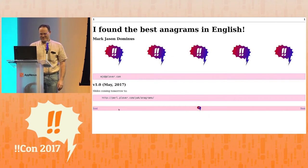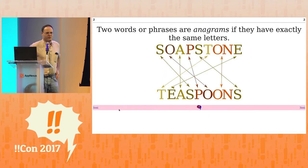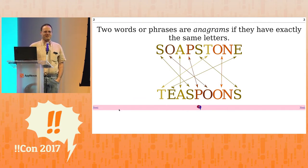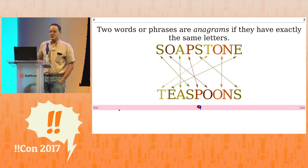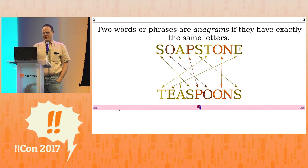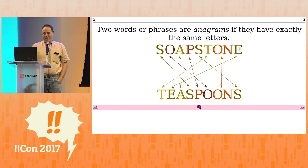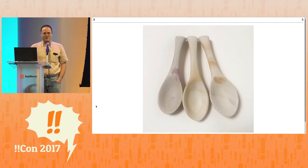Two words or two longer phrases are anagrams if they have exactly the same letters, possibly in some different order. So like soapstone and teaspoons both have two O's, an N, an E, an A, two S's, and a P, but in different orders. And after I found that out, I found out that you can actually buy soapstone teaspoons. It's the perfect gift for the anagram lover in your life.